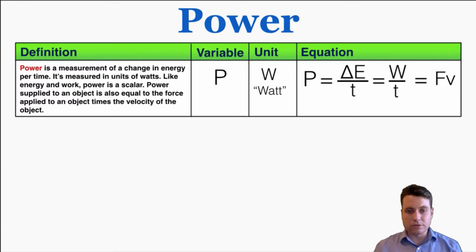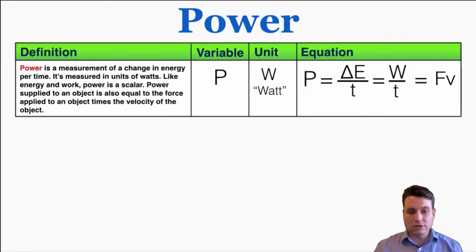This video is going to be about the idea of power in physics, which has a pretty similar definition to our everyday use of the word power. In physics, power is a measurement of a change in energy per time, so it's a rate of change of energy per time. It's measured in units of watts, which actually just means joules per second, because again it's energy per time. And like energy and work, power is a scalar.